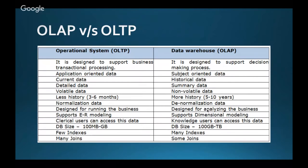Detailed data is present under OLTP and summary of data is present under OLAP. OLTP has volatile data — it is highly volatile and keeps on changing after every transaction — whereas OLAP has non-volatile data. Normalized data is present under OLTP and denormalized data is present under OLAP. OLTP is designed for running the business.